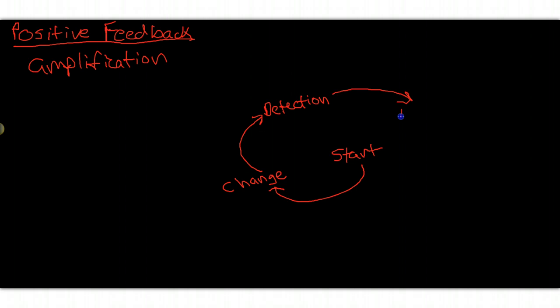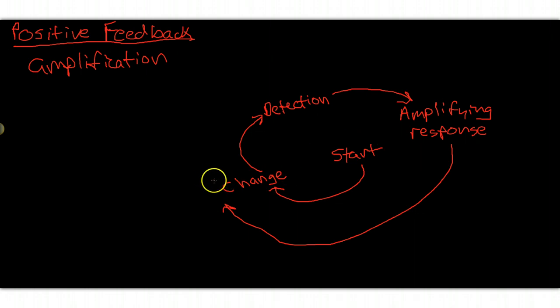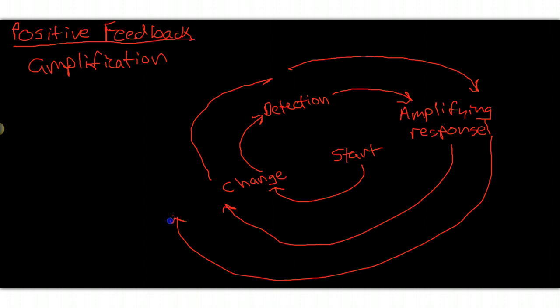The response to the change is a positive response, and this amplifies. Then what happens is this actually turns into a spiral because you get to the amplifying response, which actually promotes further change. That change is detected again, that change is again amplified, and you get further change.